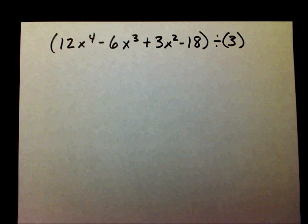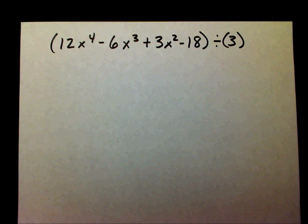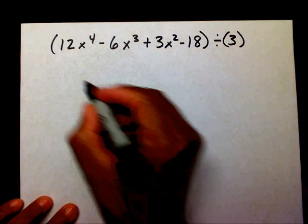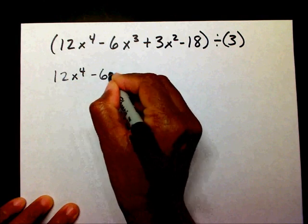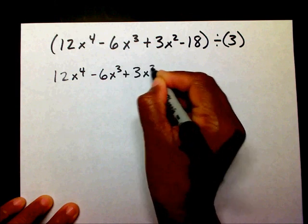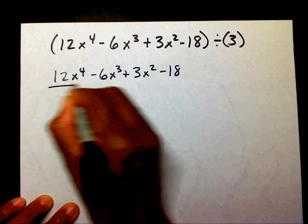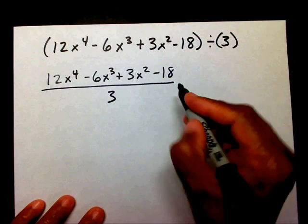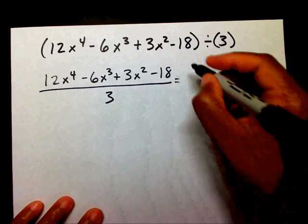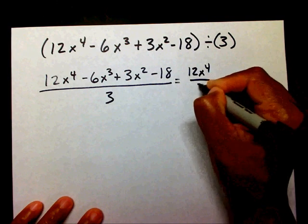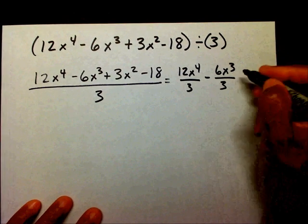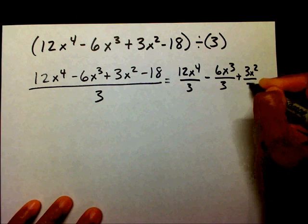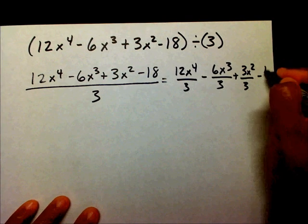Let's write 12x to the 4th minus 6x to the 3rd plus 3x squared minus 18 divided by 3. Now I'm going to divide each term by 3, so that's 12x to the 4th divided by 3, minus 6x to the 3rd divided by 3, plus 3x squared divided by 3, minus 18 divided by 3.